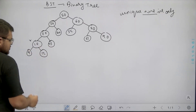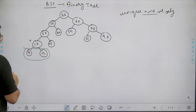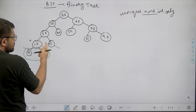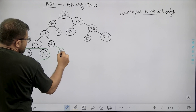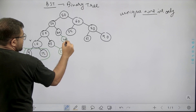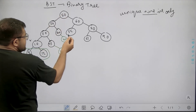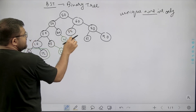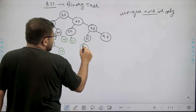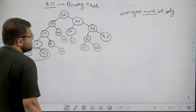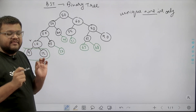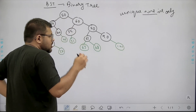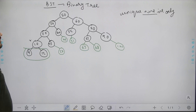Is 25 a dead end? No — we can add 27 on the right (greater than 25, less than 30). Is 40 a dead end? No — we can add 45 (greater than 40, less than 50). Is 55 a dead end? No — we can add 51 as a left child (less than 55, greater than 50). Is 65 a dead end? No — we can insert 63 on the left or 68 on the right. If you can insert even one child, it is not a dead end. Is 90 a dead end? No — we can add 100. So none of these are dead ends.